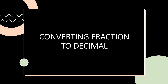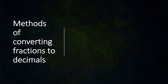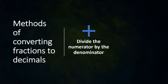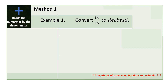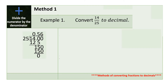Let's study first converting fraction to decimal. We will be presenting here the two methods of converting fractions to decimals. The first one is to divide the numerator by the denominator, and the other one is using multiplication. Let's see this example: convert 14 over 25 to a decimal. Using method 1, we divide the numerator by the denominator. So 14 divided by 25 is 0.56, or 56 hundredths.